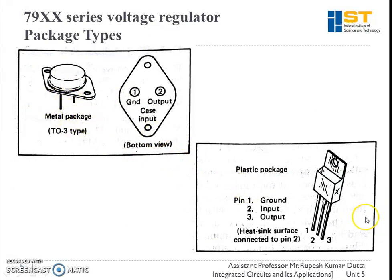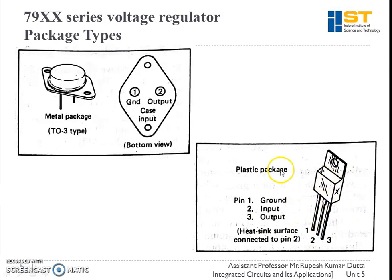The 79XX series also comes in two different package types, just like the 78XX series: a metal package and a plastic package. However, the pinout is different. In the metal package, ground is pin 1, output is pin 2, and the case is input. In the plastic package, pin 1 is ground, pin 2 is input, and pin 3 is output. Note the difference from the 78XX series: in 78XX, pin 1 was input, pin 2 was ground, and pin 3 was output, whereas in 79XX, pin 1 is ground, pin 2 is input, and pin 3 is output.